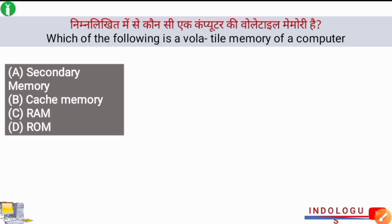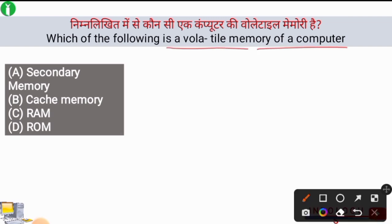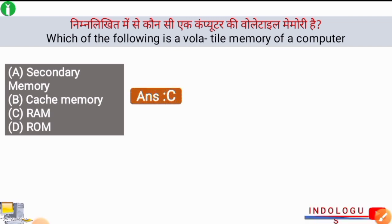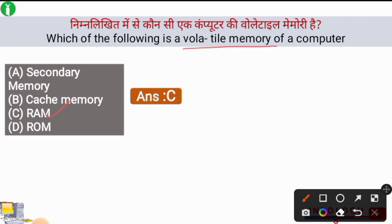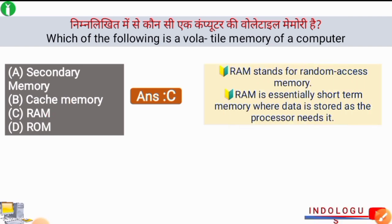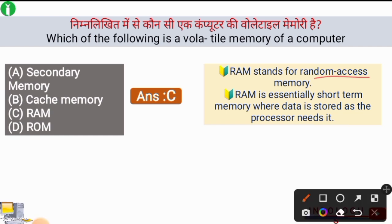Next question: Which of the following is a volatile memory of a computer? The right answer is option C, RAM, whose full form is Random Access Memory. It is a type of volatile memory, meaning it requires power in order to work. RAM is essentially short-term memory where data is stored as the processor needs it.